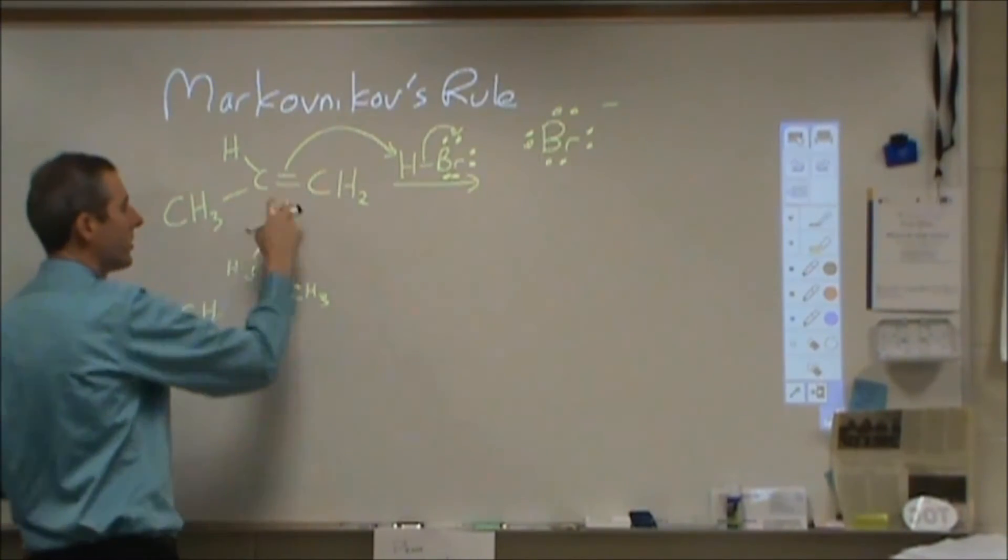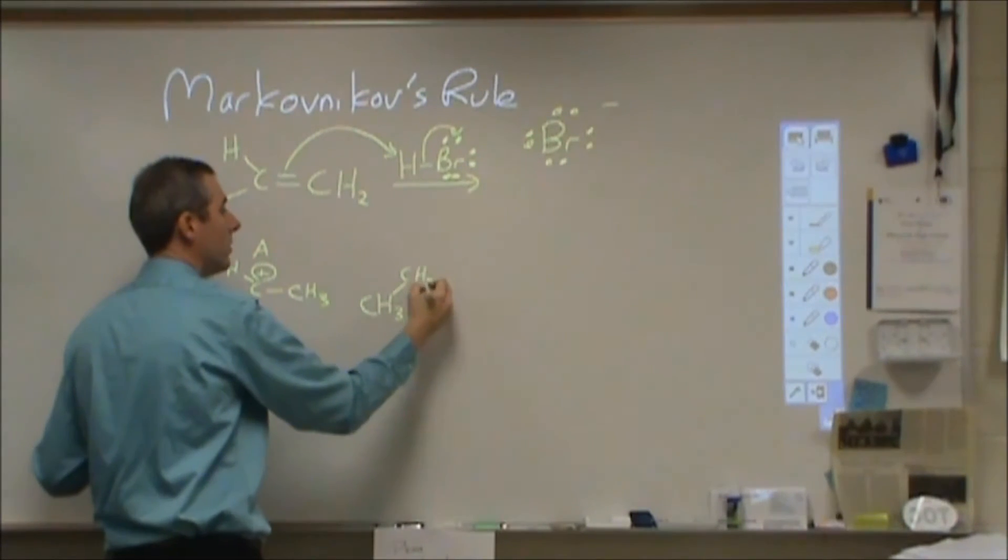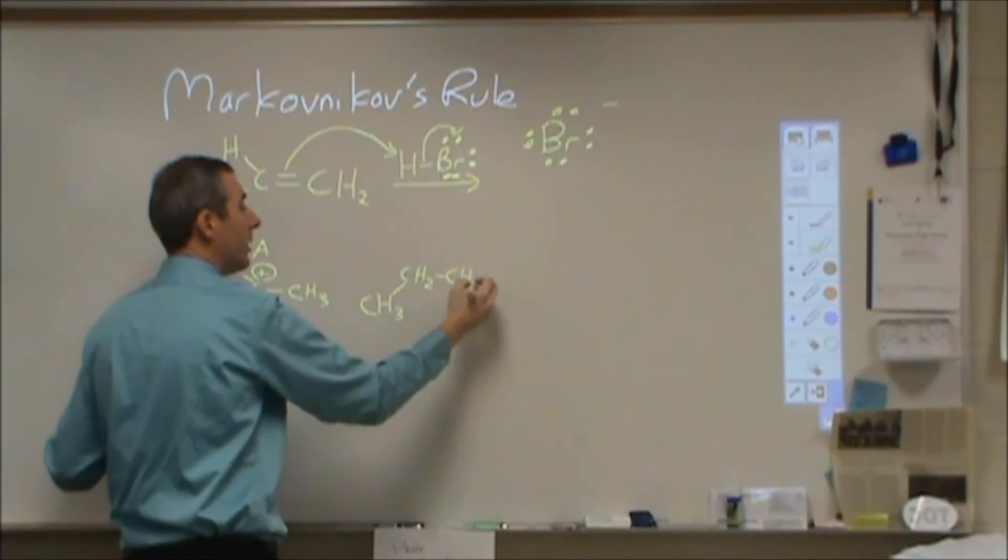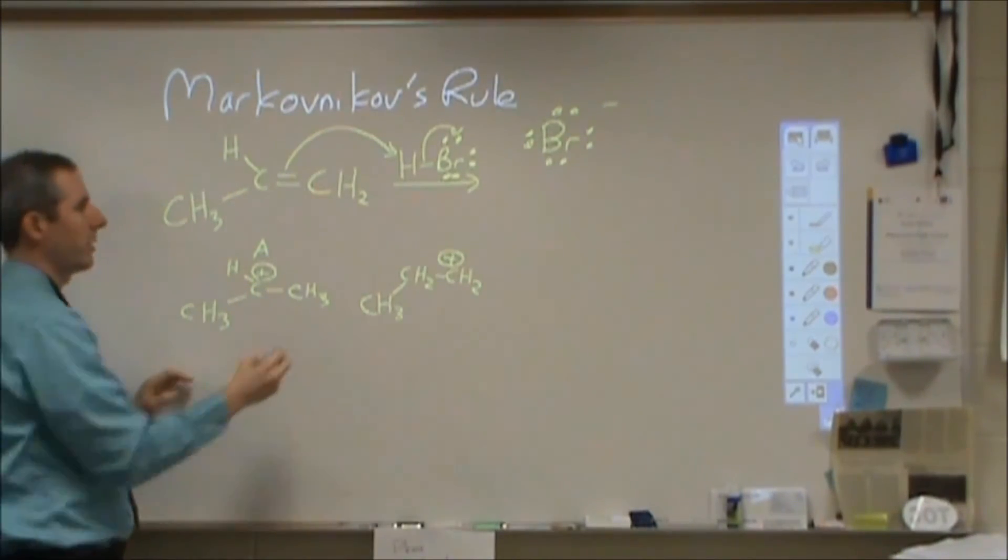In the other option, the hydrogen goes here. We'd have CH3-CH2-CH2+ with the positive charge here. Let's call this option B.